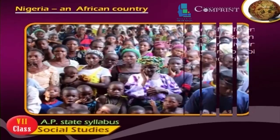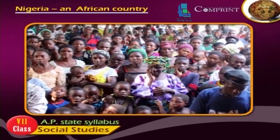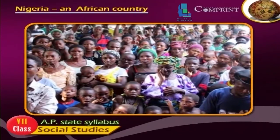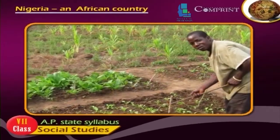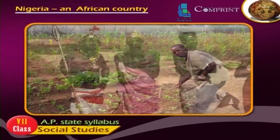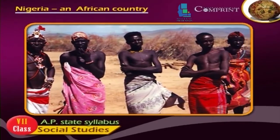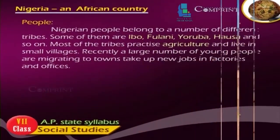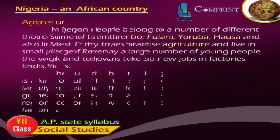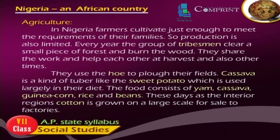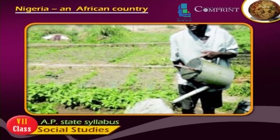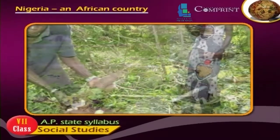People. Nigerian people belong to a number of different tribes. Some of them are Igbo, Ijaw, Kanuri, Yoruba, Hausa, and so on. Most of the tribes participate in agriculture and live in small villages. Recently, a large number of young people are migrating to towns to take up new jobs in factories and offices.